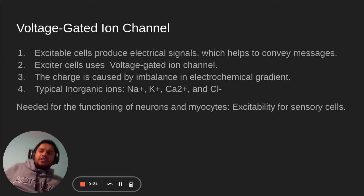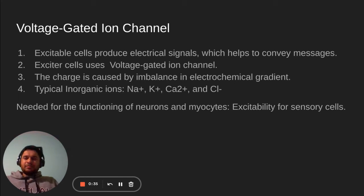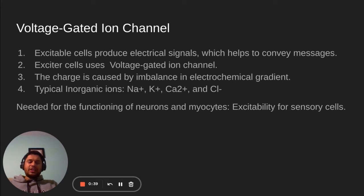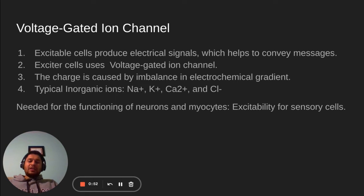So what is a voltage-gated ion channel? These are needed for excitable cells to produce electrical signals, which helps to convey messages. The excitable cells use this voltage-gated ion channel, so it's a must for these types of cells. The charge is caused by imbalances in an electrochemical gradient — that's the formation for charges.